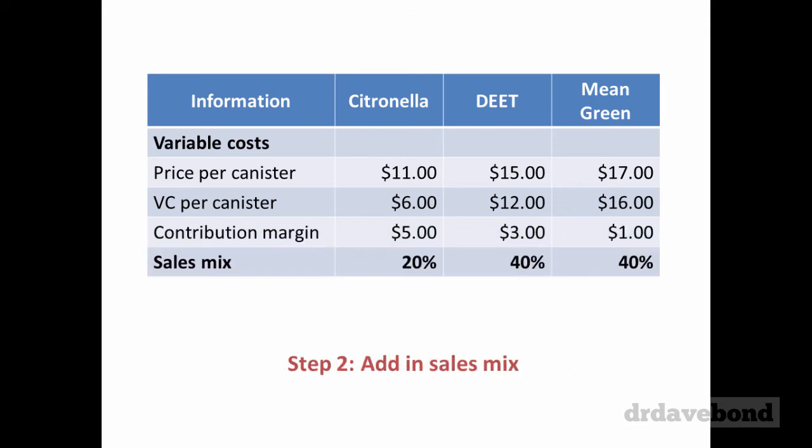Step two: we add in the sales mix. The sales mix is the proportion of total sales in terms of units for each of these products. So 20% of the units sold are Citronella, 40% are DEET and 40% are Mean Green.